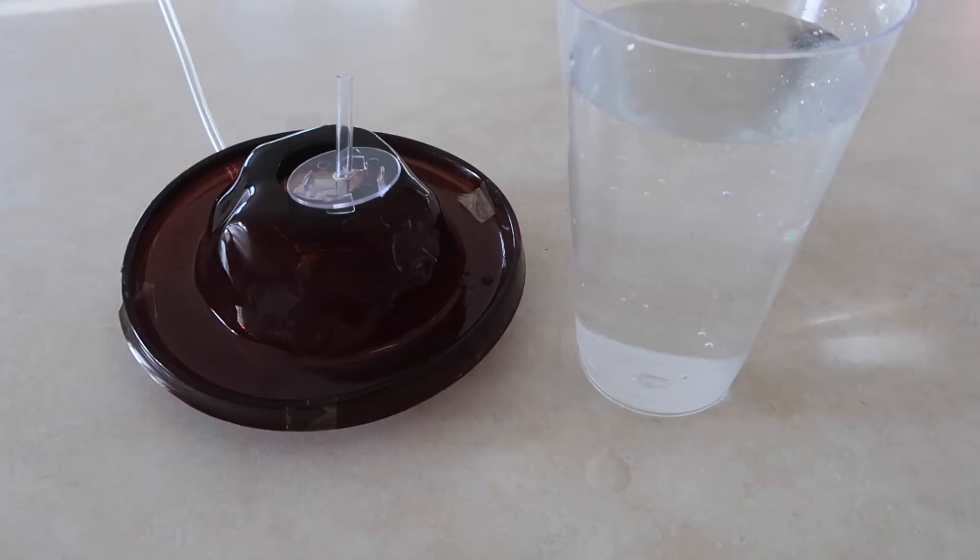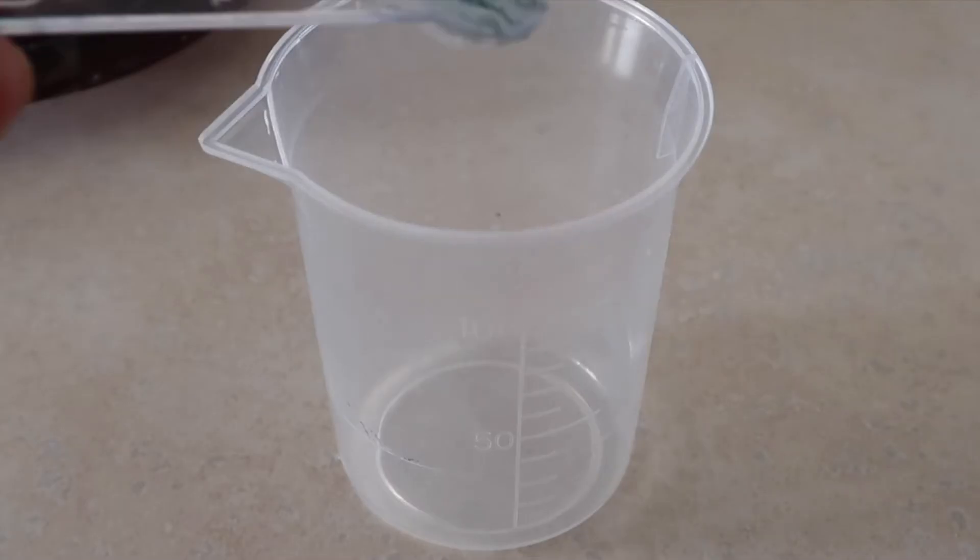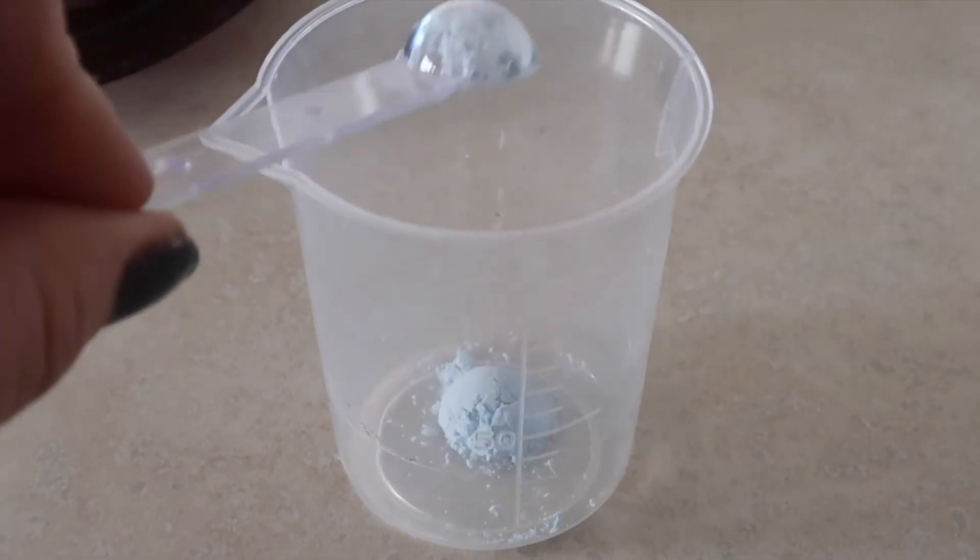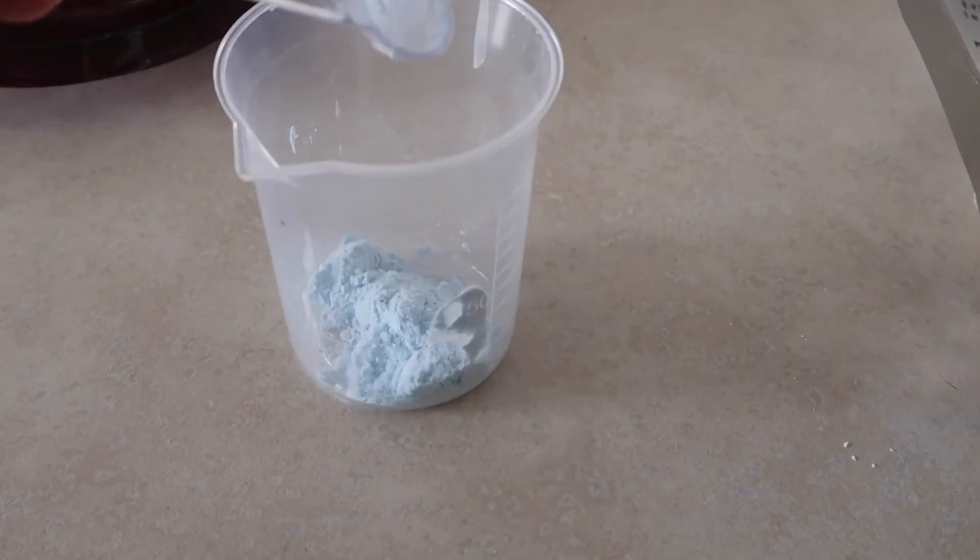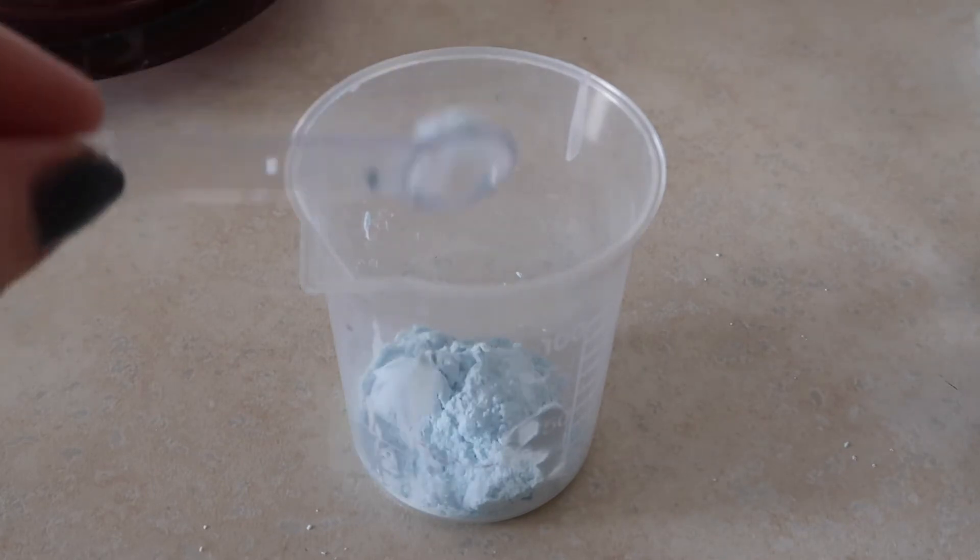Next, add 5 scoops of magma gel to the beaker cup: 1, 2, 3, 4, 5.